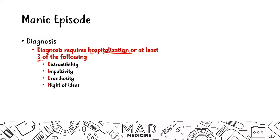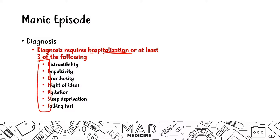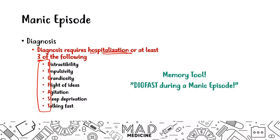Flight of ideas means they have a continuous stream of ideas coming to them. Together, the first letters of these symptoms spell out the mnemonic DIGFAST — Distractibility, Impulsivity, Grandiosity, Flight of ideas, Agitation, Sleep deprivation, Talkativeness. The memory tool is: 'Dig fast during a manic episode.' That's how to remember it, and it appears in many books as well. You can also think of someone who is manic as wanting to dig really fast.